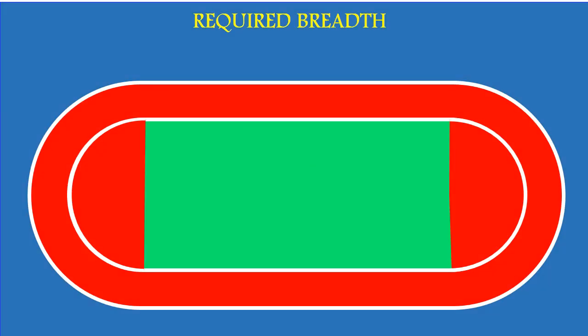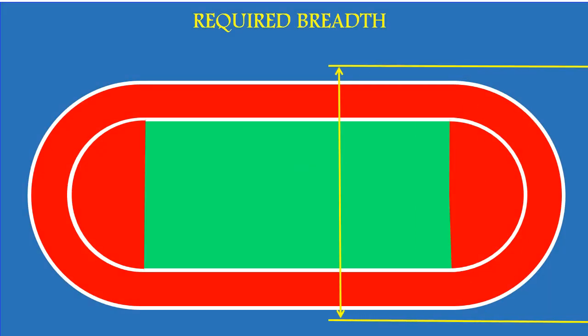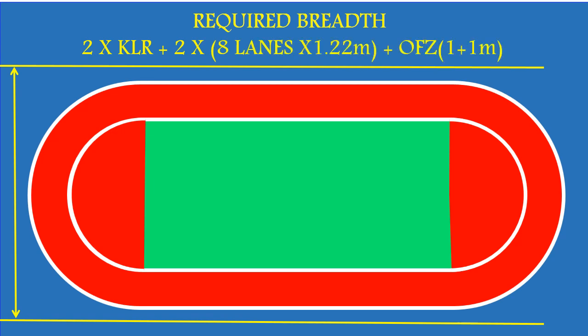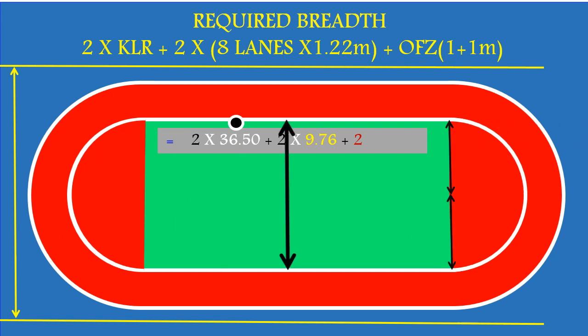This segment explains the required breadth to layout a 400 meter standard track. The formula is: 2 into KLR plus 2 into 8 lanes width plus obstacle free zone. Here each color identifies each distance. That is 2 into 36.50 meters (Curb Line Radius) plus 2 into 9.76 meters (width of 8 lanes) plus 2 meters obstacle free zone.